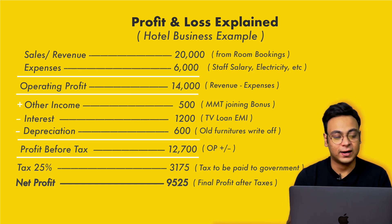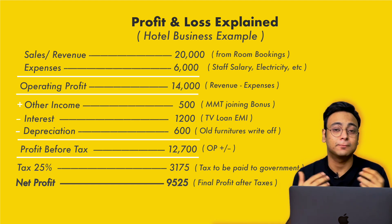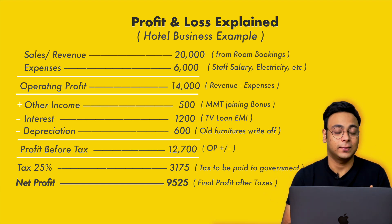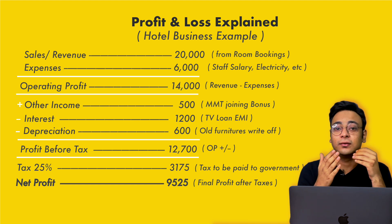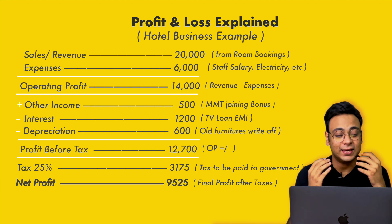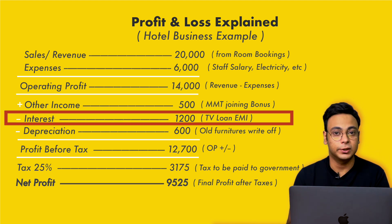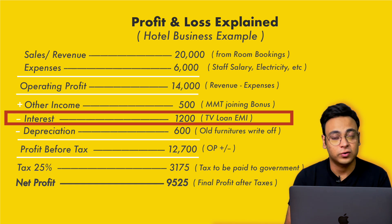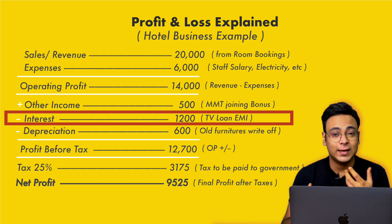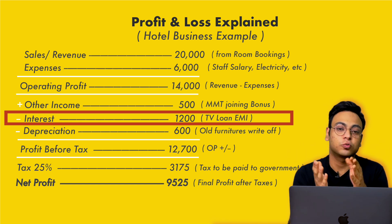With that, we add certain factors — other incomes of the company. For instance, a hotel business might get a joining bonus from MakeMyTrip, say 500 rupees. So we add that. Then the biggest thing people often overlook in a P&L statement is the interest burden. Since this hotel is running a business, it took a few EMIs for buying TVs, and the EMI amount for the year is 1,200. This amount will be deducted from the company's operating profit.